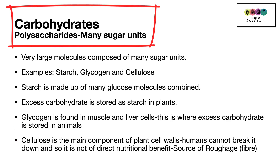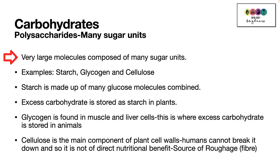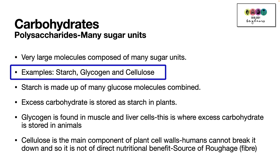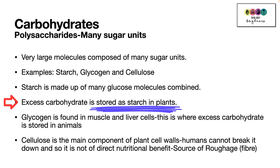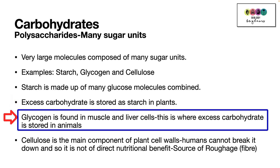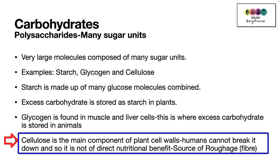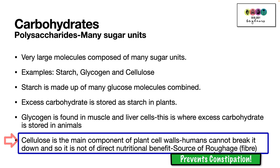Polysaccharides are made of many sugar units bonded together, making them very large molecules. Examples include starch, glycogen, and cellulose. Starch is made up of many glucose molecules combined, and excess carbohydrate is stored as starch in plants. Glycogen is found in muscle and liver cells — this is where excess carbohydrate is stored in animals. Cellulose is the main component of plant cell walls; humans cannot break it down, so it's not of direct nutritional benefit, but it's a great source of roughage or fibre in our diet, which prevents constipation.